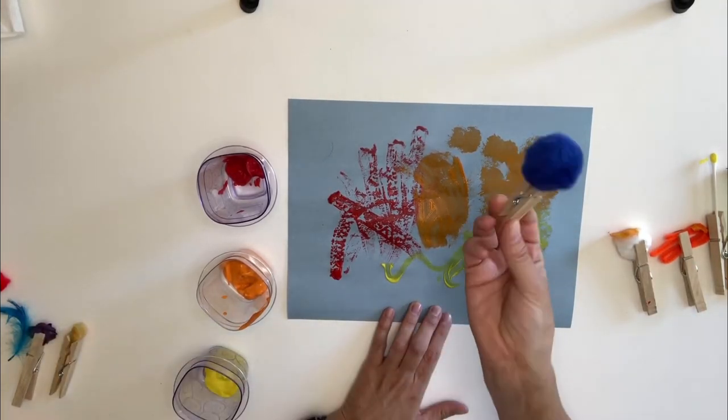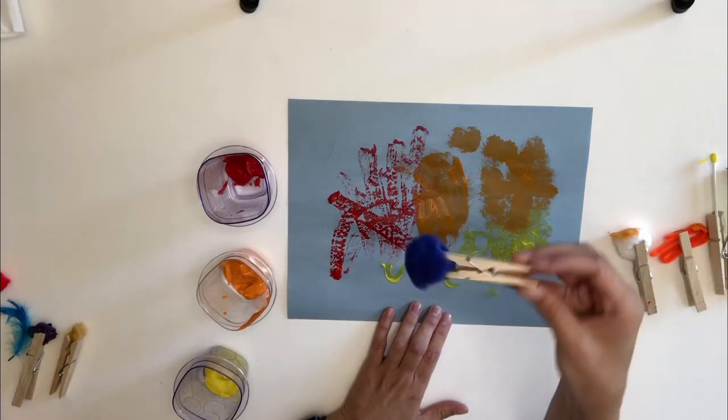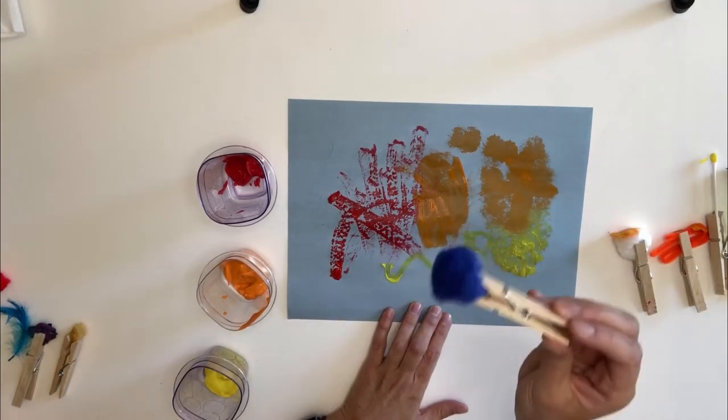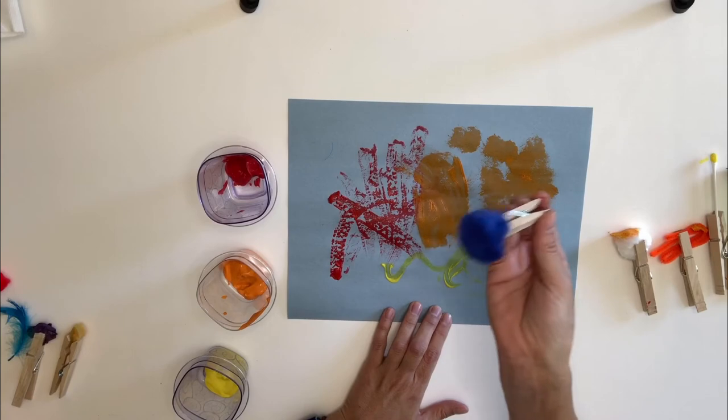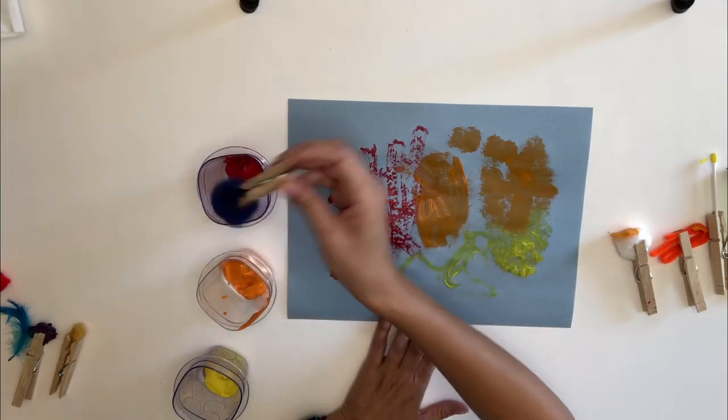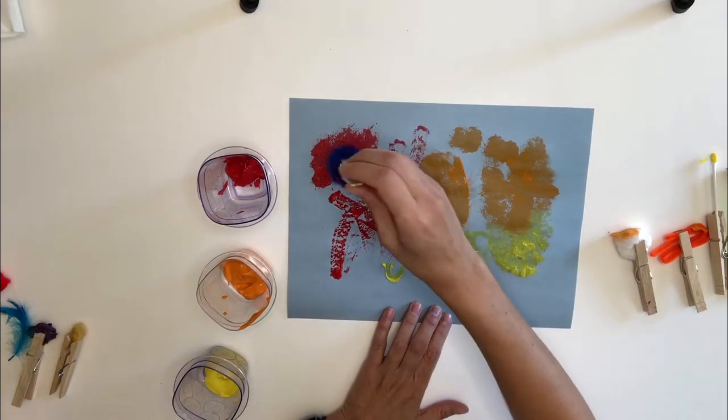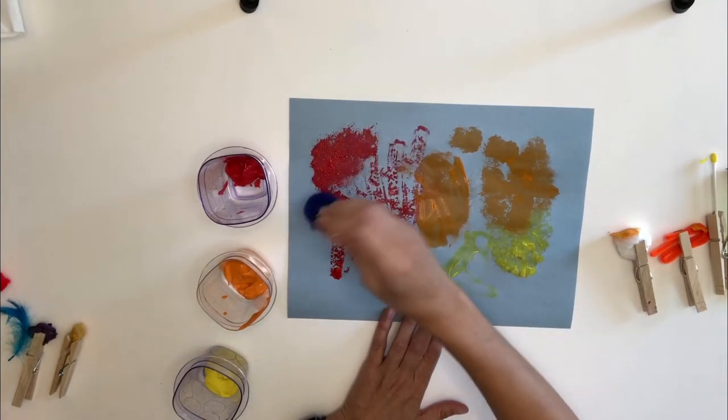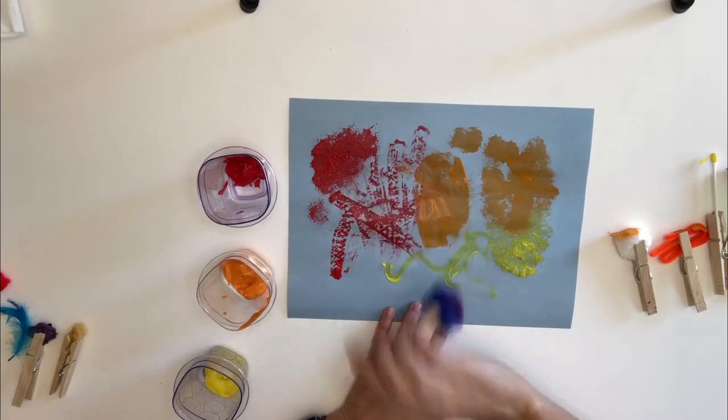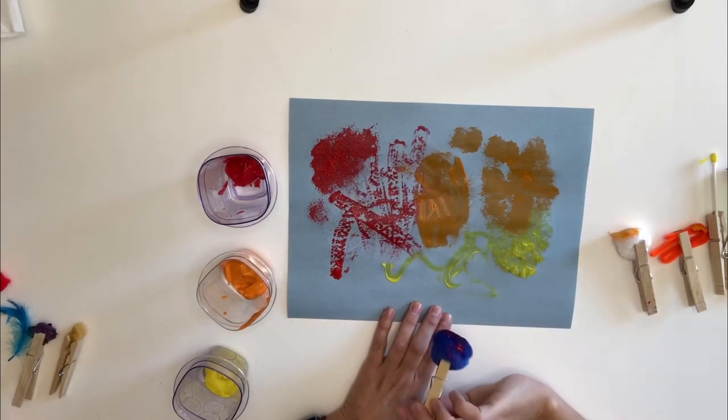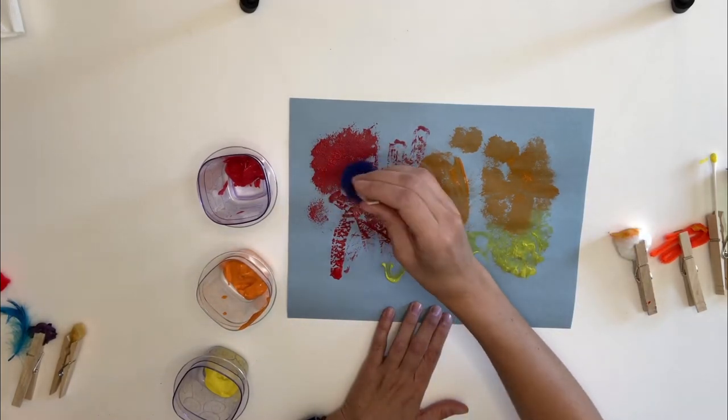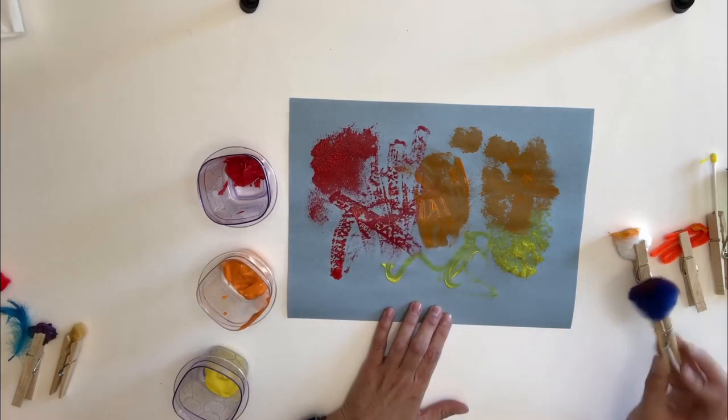Now I have my pom-pom. Do you think it'll be the same or different than the cotton ball? Let's find out. It looks kind of similar, doesn't it? It does. It has more of a pokey texture than the cotton ball does, though, when I do it with the dabber. Yeah, I like that one.